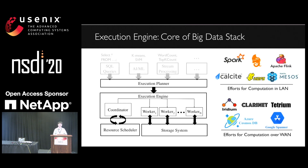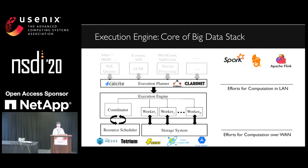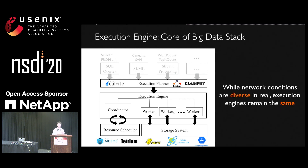Now let's bring back these efforts and see what happens if we categorize them. We can notice these efforts have customized many layers for different scenarios, like different execution planners in the LAN setting or WAN setting. However, the execution engines available today are still the ones primarily designed for data center networks — that's Spark and TASP. But in reality, even for these execution engines, their network conditions can be diverse depending on their hosted machines and the LAN or WAN settings.